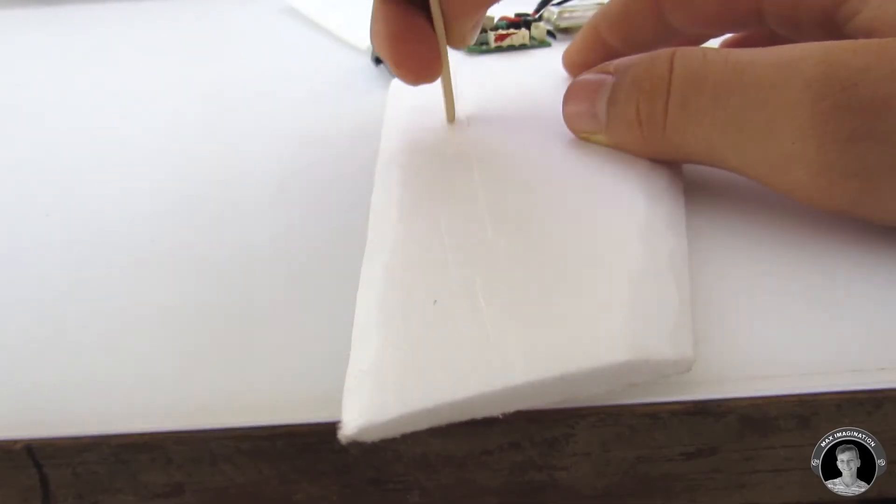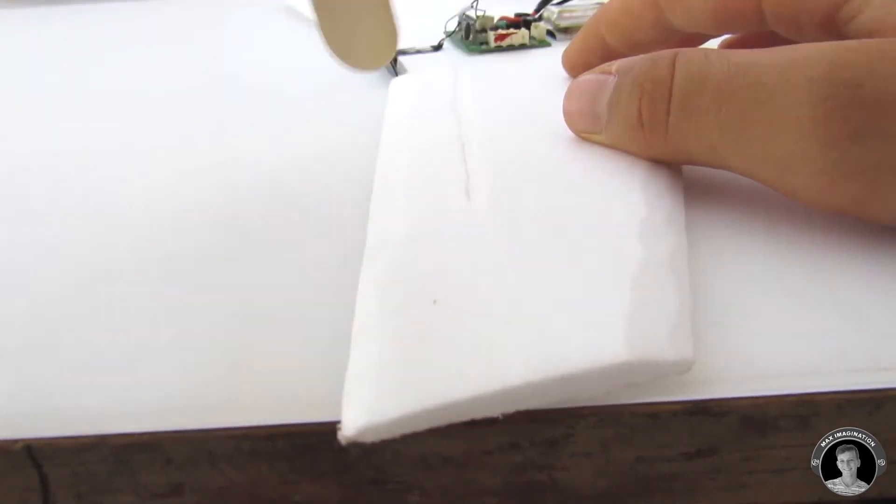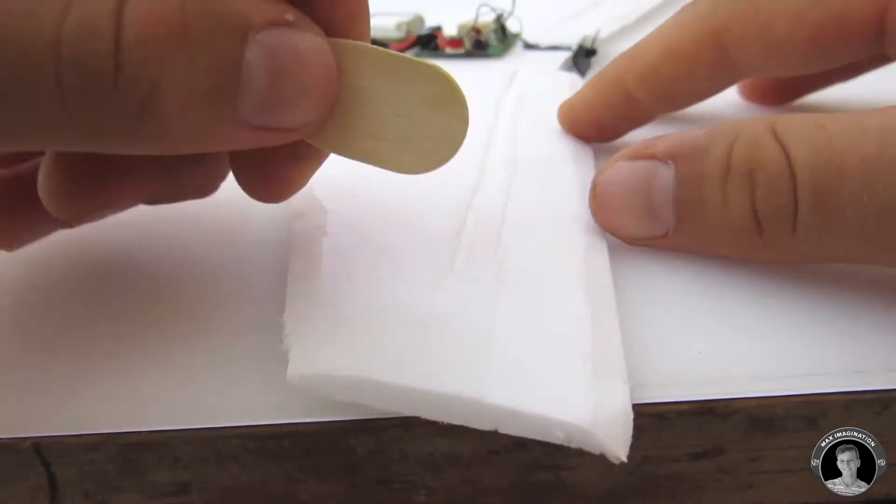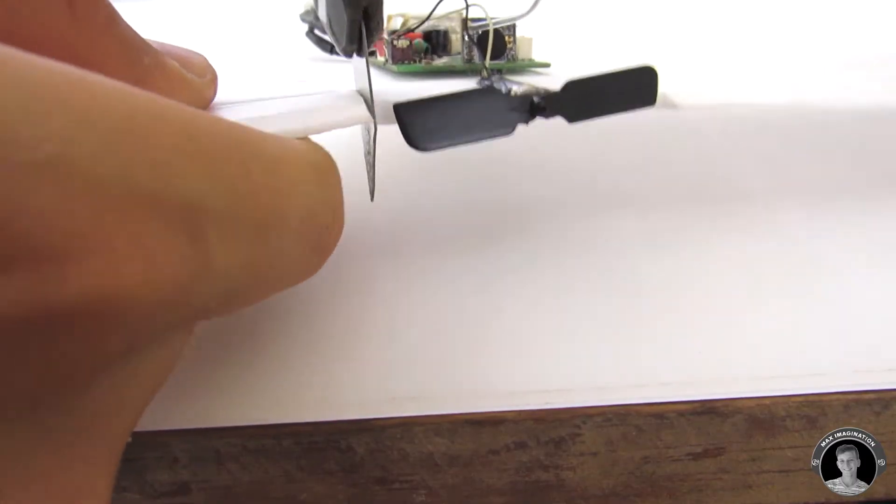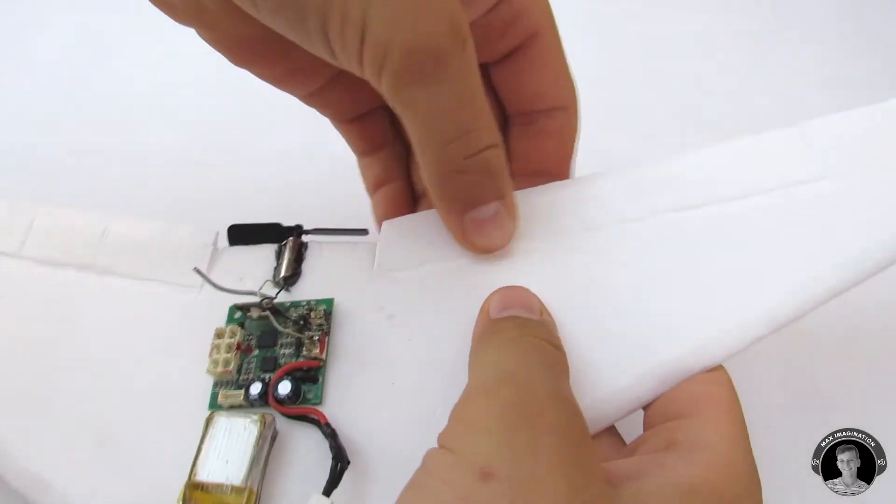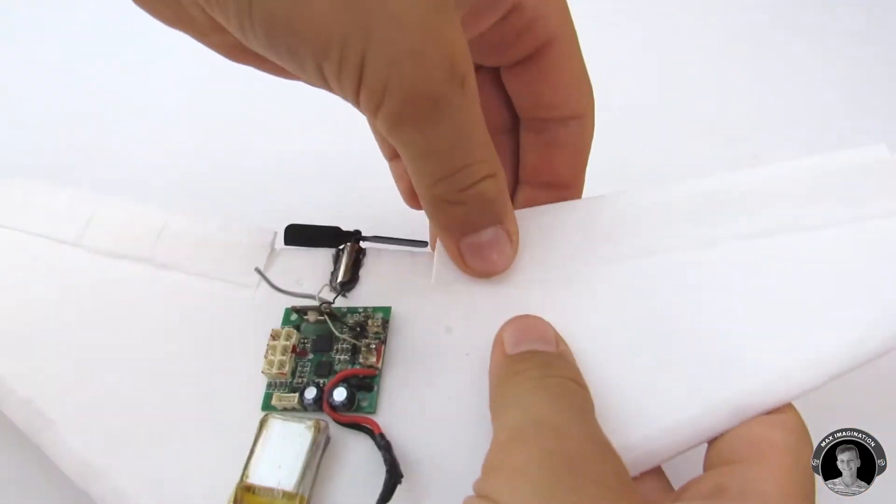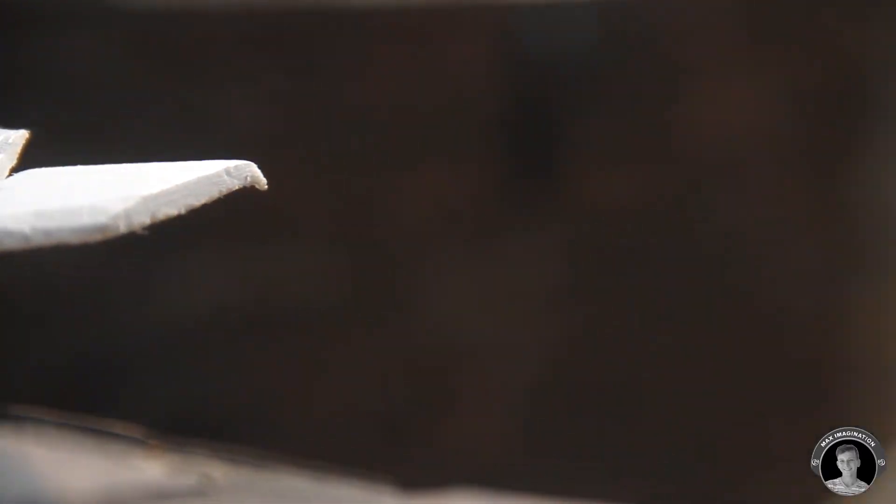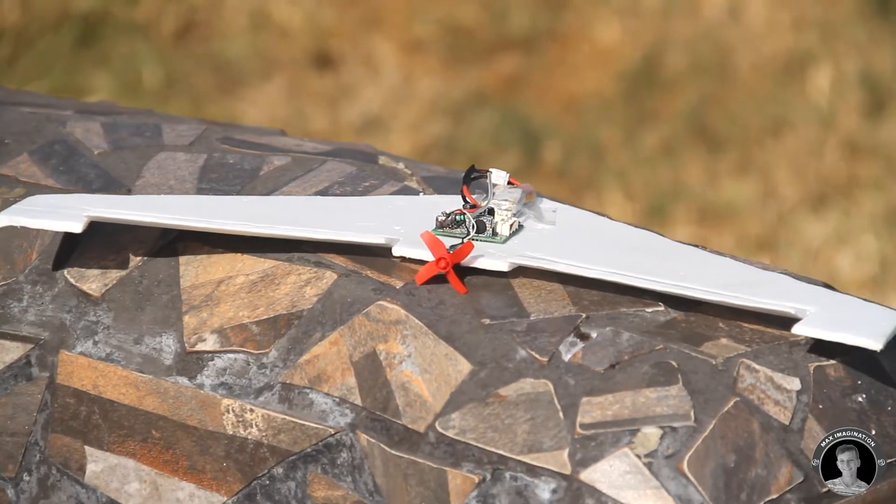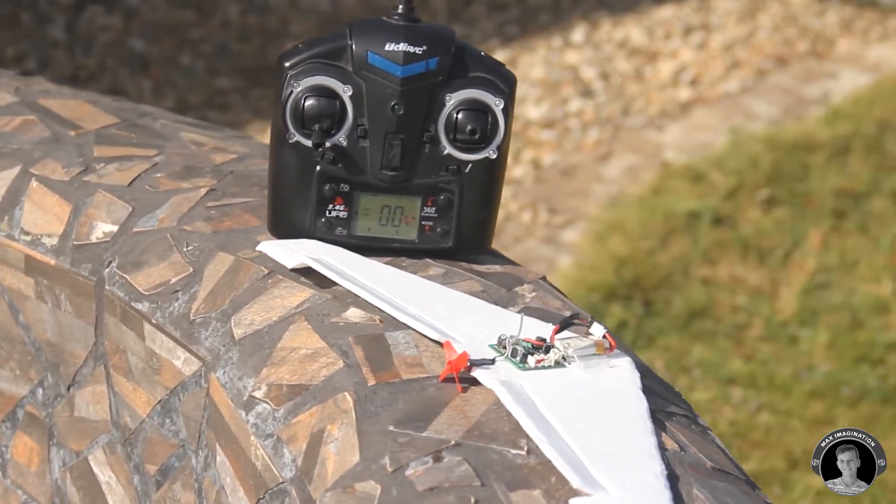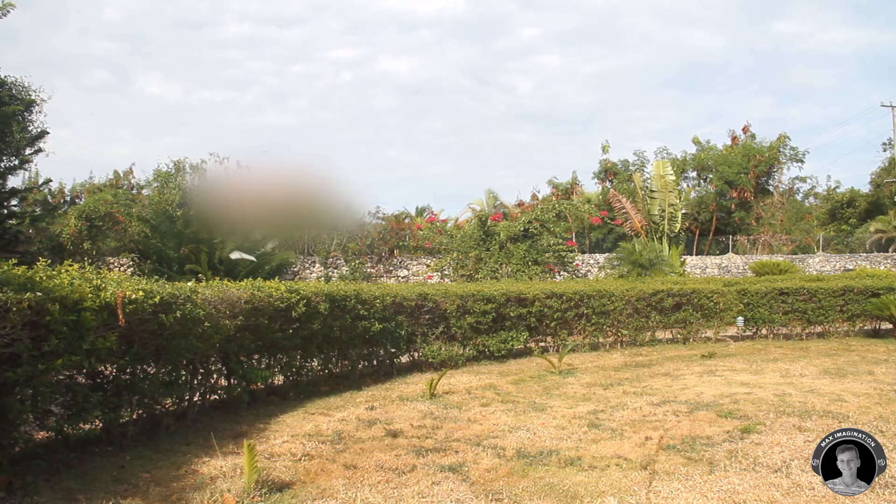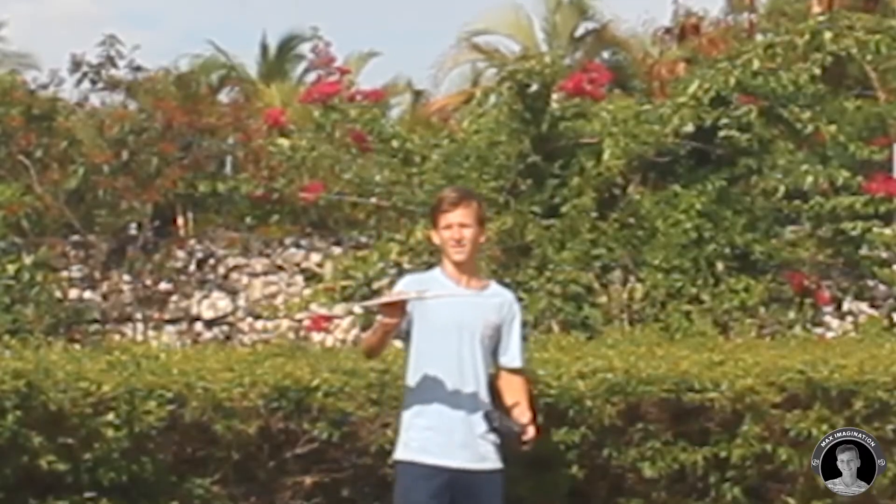Now let's make the ailerons from the back part of the wing. Bending the ailerons upwards will help the plane to get lift as it speeds up. So when the plane speeds up, it'll start to lift itself up at the same time. And now we're done with the RC Zagi wing.